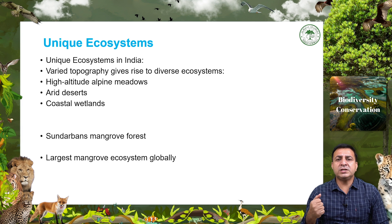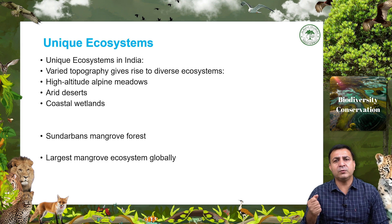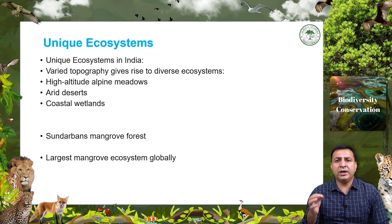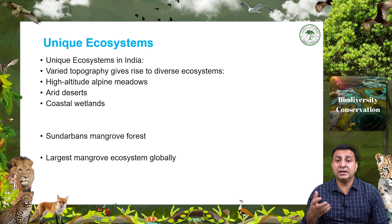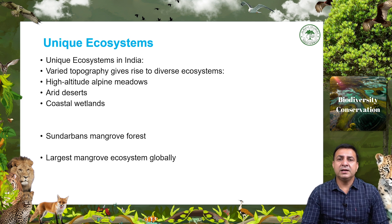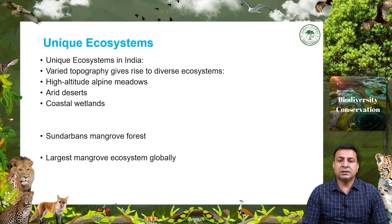India also has a unique range of ecosystems. India's varied topography has given rise to a wide range of ecosystems, from high-altitude alpine meadows to arid deserts and coastal wetlands. The Sundarbans mangrove forest, shared with Bangladesh, is the largest mangrove ecosystem globally and serves as a critical habitat for numerous species, including our national animal, the Bengal tiger.